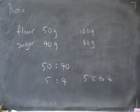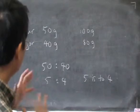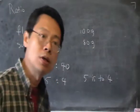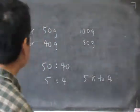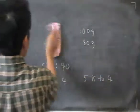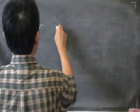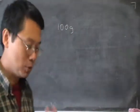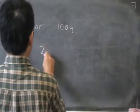Now, let's think of this in another way. Suppose that we have a certain amount of sugar, and I want to divide this into two parts. Say I have 100 grams of sugar. Now suppose that I want to divide them into two parts, and the two parts must have the ratio 2 is to 3.